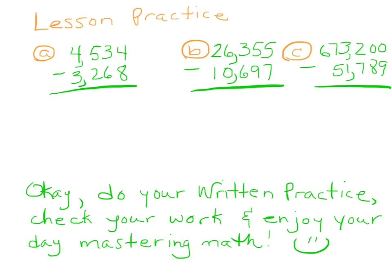Here's how it works for the practice. You have 4 and want to take away 8 — you have to borrow, so this becomes a 2. There's now 14, so 14 minus 8 is 6. You have 2 minus 6 — you have to borrow and regroup, so here's 4, and that becomes 12. So 12 tens minus 6 tens is 6. You have 4 minus 2, which is 2. And 4 minus 3 is 1.